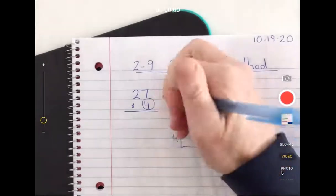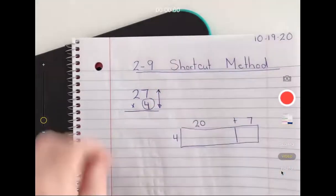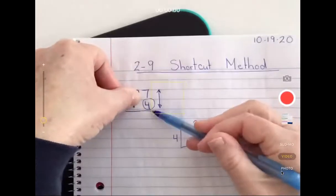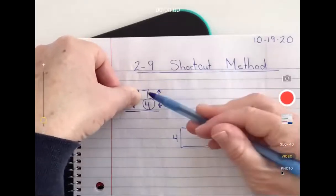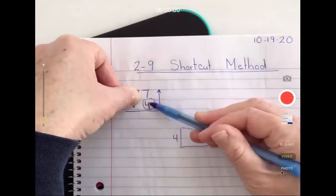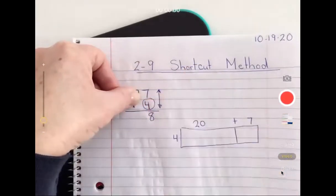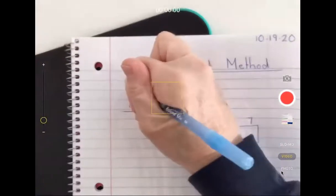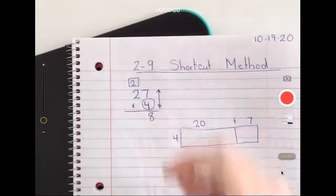The four is in charge. I'm going to draw arrows because the first multiplication I'm thinking about is four times seven. I'm imagining that two is not even there. I know four times seven is 28. Like in addition, the eight goes down and those two tens are going to get brought up to the number next door.